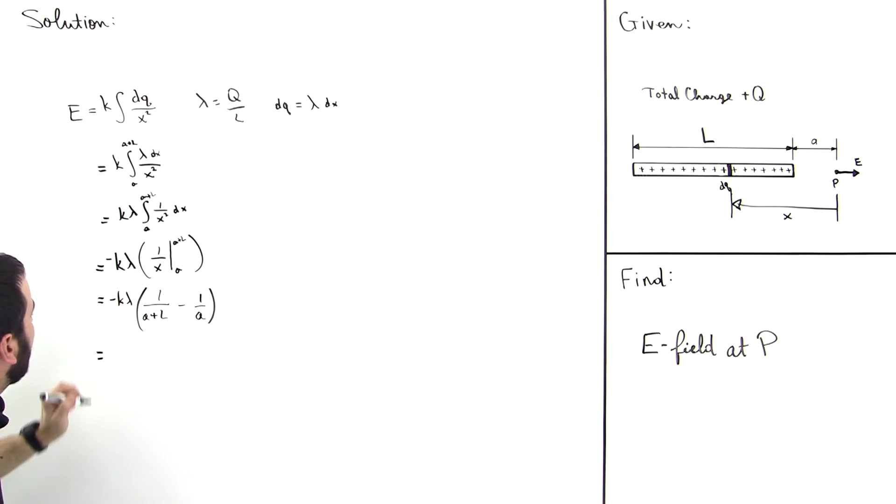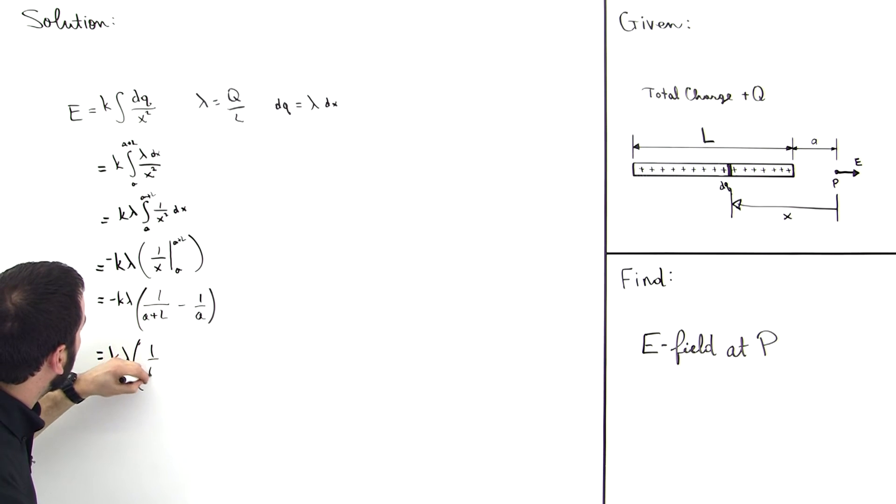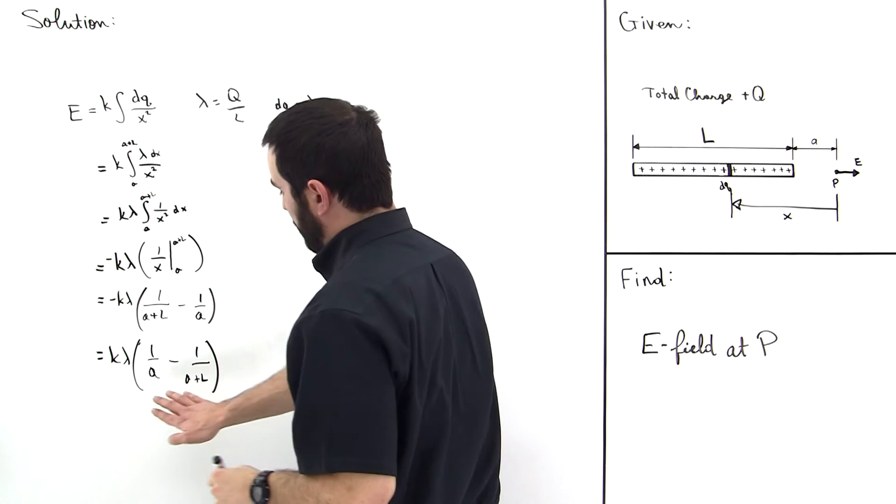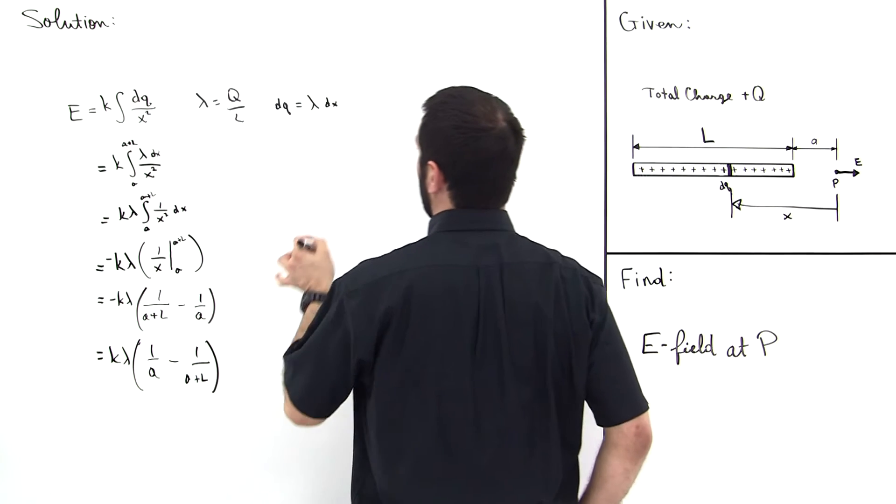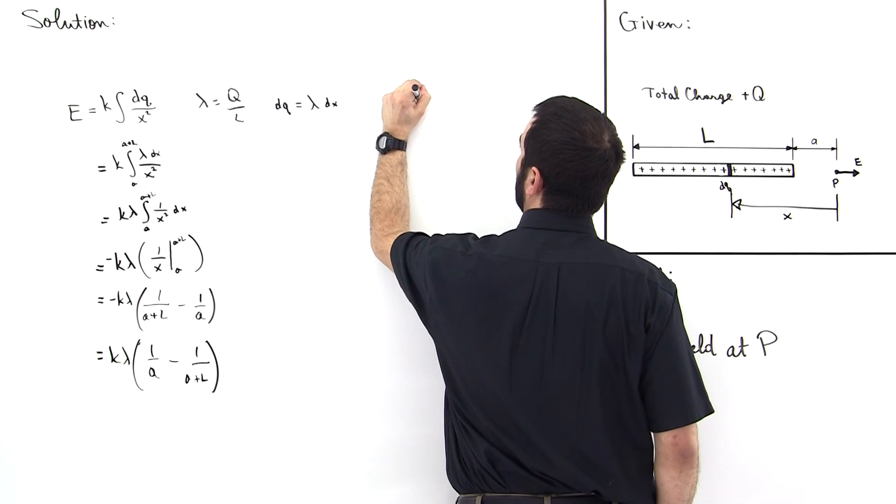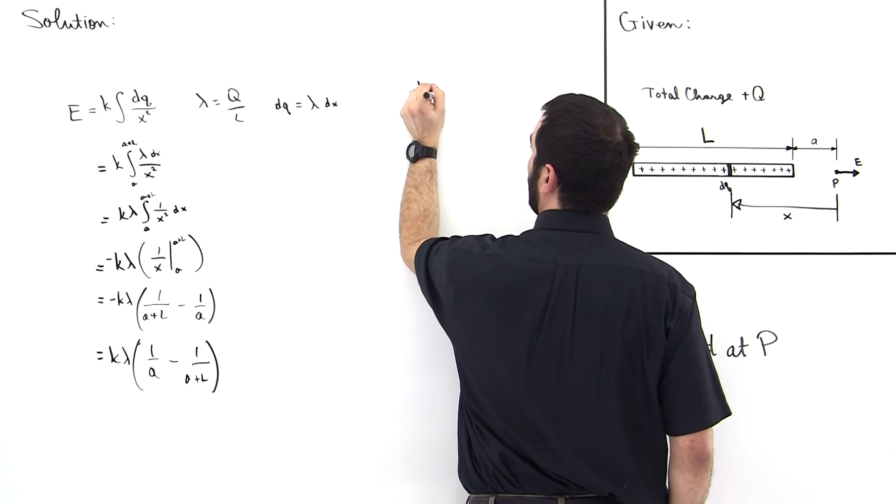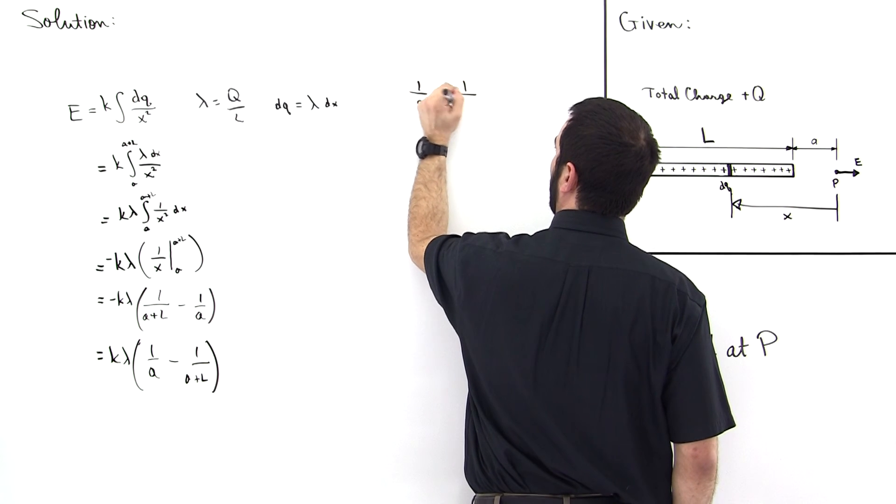That's equal to - now let's distribute the negative back through, which basically is just going to take these two guys and swap them around. So we have K times Lambda times 1 over A minus 1 over A plus L. So real quick, let's do this operation inside here. 1 over A minus 1 over A plus L.